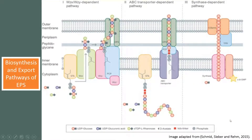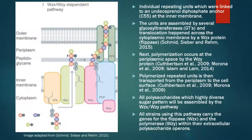These are the biosynthesis and export pathways of EPS. First is the WZX/WZY dependent pathway, ABC transporter dependent pathway, and synthase dependent pathway. However, today we are only going to focus on the WZX/WZY dependent pathway, because EPS1 uses this pathway. The units are assembled by glycosyl transferase, then exported into the periplasmic space by WZX protein. After that, WZY polymerizes it, and eventually it is exported out of the cell by OPX.